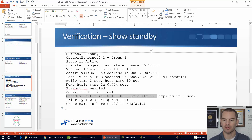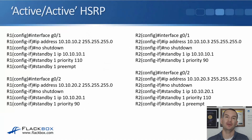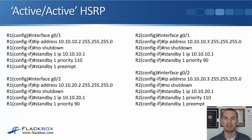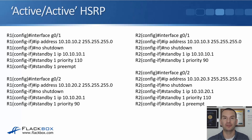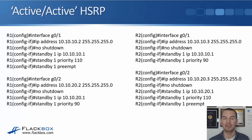Now let's look at how we can get active-active HSRP. For the same IP subnet it's always going to be active-standby, but if you have different IP subnets — and different VLANs — you can have R1 active for one IP subnet and R2 active for a different subnet. For example, say engineering PCs are in the 10.10.10.0/24 subnet and sales PCs are in the 10.10.20.0/24 subnet. Engineering PCs send their traffic through R1 and sales PCs send their traffic through R2.